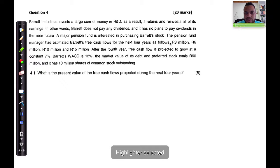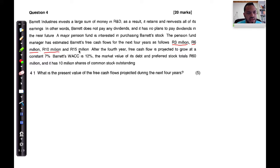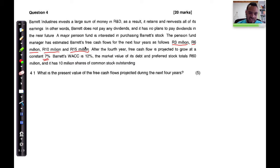The free cash flows are: three million, six million, ten million, and fifteen million. After the fourth year, the free cash flow is projected to grow at a constant seven percent. So after year four — meaning year five — we're going to have a seven percent increase on fifteen million. Barrett's WACC is twelve percent.